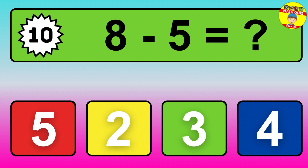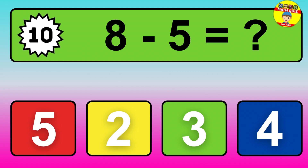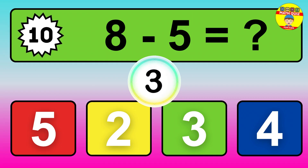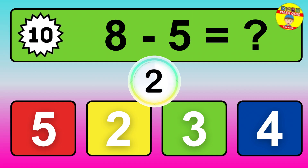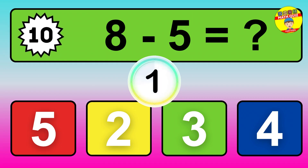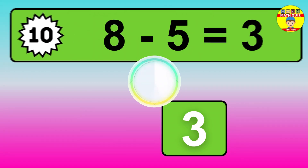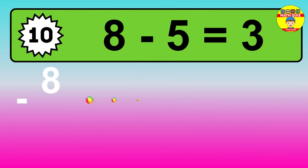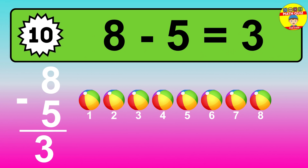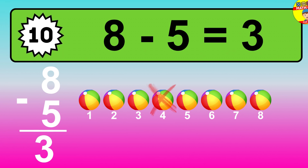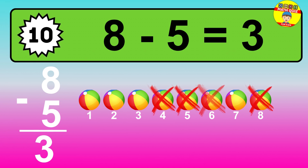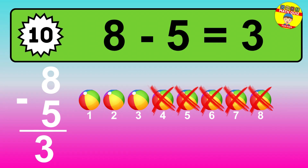Question 10: 8 minus 5 equals what? The answer is: 8 minus 5 is 3. Let's count it: 1, 2, 3.